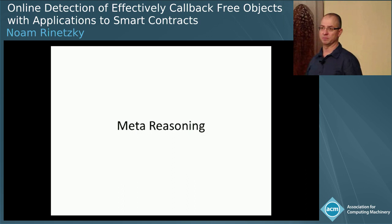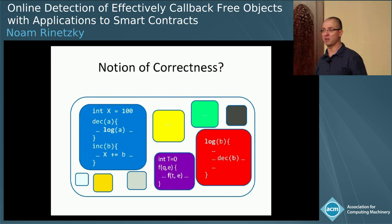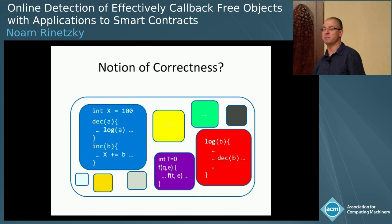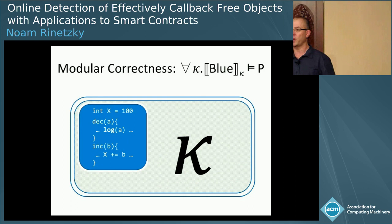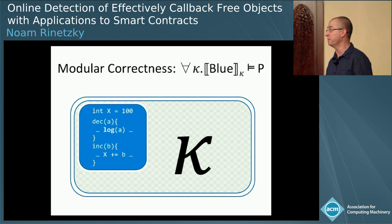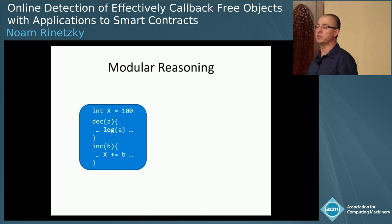We want to reason about these systems, but these systems are very dynamic. Multiple vendors can create different components, so I cannot even trust that when I invoke a method on a different component, it will be the same component as last time. The only sensible thing is modular correctness conditions — verifying my component in any possible context — because I do not know what the other code is.